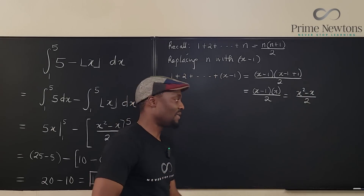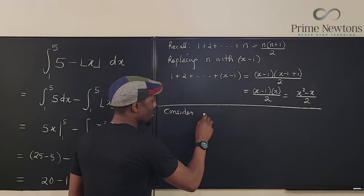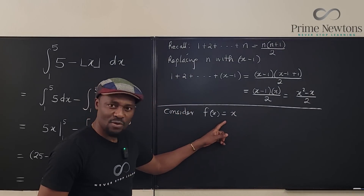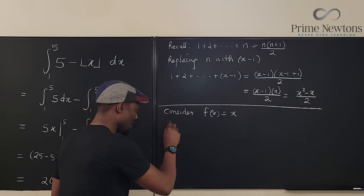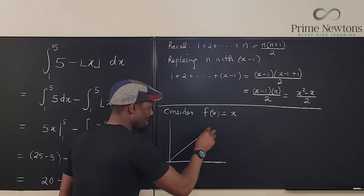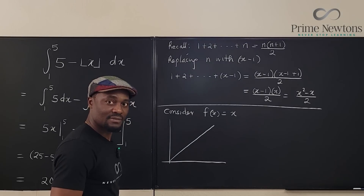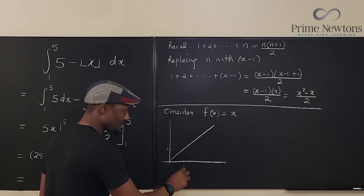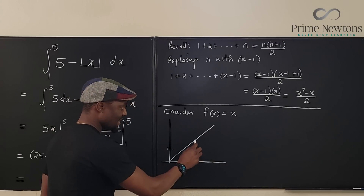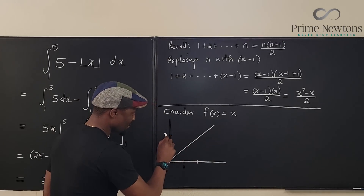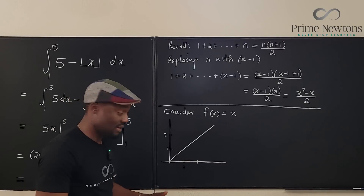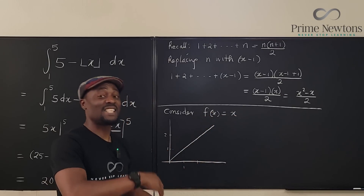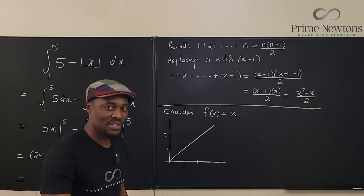Let me explain how we arrived at that. Consider f(x) = x — the identity function. Its graph is a straight line at 45 degrees: when x is 1, f is 1; when x is 2, f is 2. Whatever you put in is what you get out. But for the floor function, what you put in is not what you get — you always get less, unless the input is already an integer.